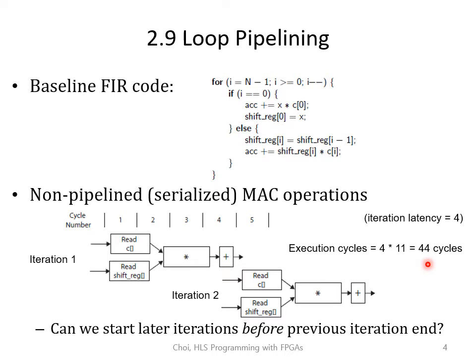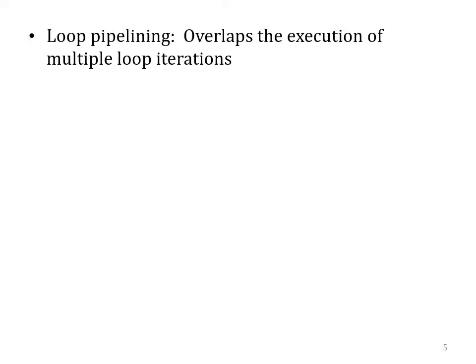But is it really necessary to wait for the previous iteration to finish before starting the next one? Can we start the next iteration any sooner? The answer is yes. There's actually no dependency that stops you from performing the reads at cycle 2 rather than waiting until the 5th cycle. So we're going to perform our first optimization, which is called loop pipelining. Loop pipelining overlaps the execution of multiple loop iterations and starts later iterations before the previous iterations finish.